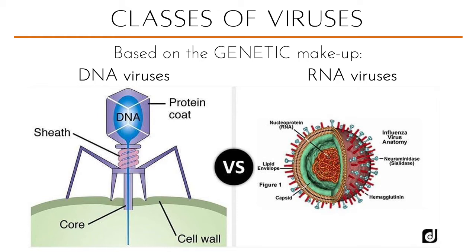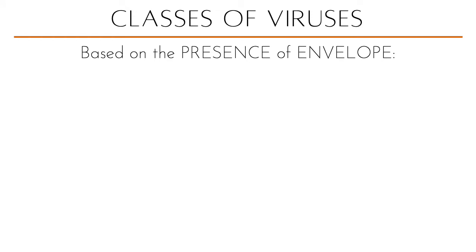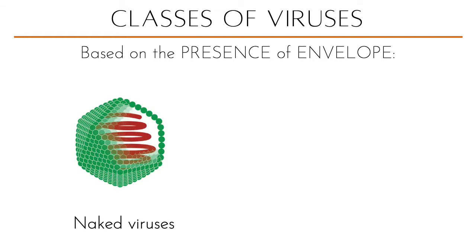This also defines which viruses fall under the DNA family and which fall under the RNA family. Lastly, viruses can be classified based on the presence of a viral envelope. A virus is composed of a nucleic acid contained within a protein coat — the capsid — and together they're called the nucleocapsid. Some viruses have an envelope; if they don't, they are called naked viruses.